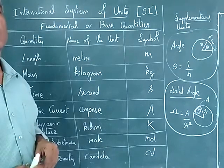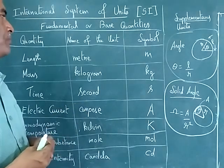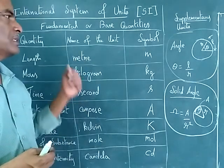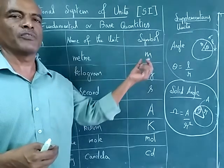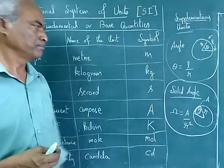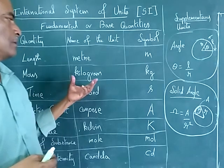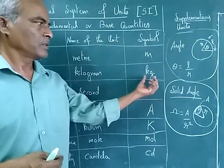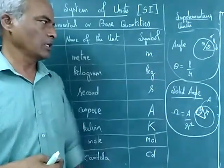Length is the first quantity. The unit is meter and in symbolic format small m. Mass, kilogram, kg.